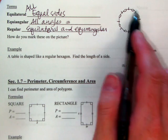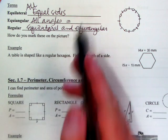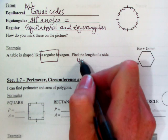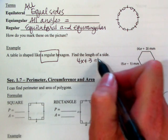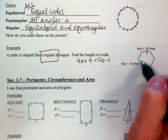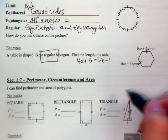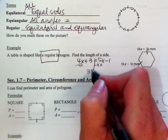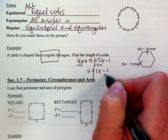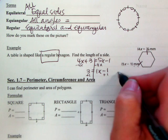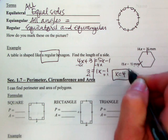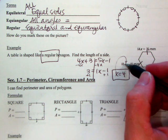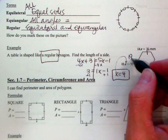A table is shaped like a regular hexagon — everything's equal. Find the length of a side: that means 4x + 3 has to equal 5x - 1 because it's a regular shape. Solve it: move 4x over, so 3 = x - 1, add 1, so x = 4. They asked for the length of a side, so plug in: 5 times 4 is 20 minus 1 — the length of the side is 19.